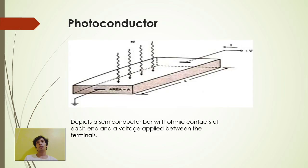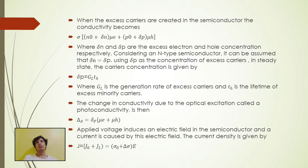Photoconductor depicts a semiconductor bar with ohmic contacts at each end and voltage applied between the terminal. When the excess carriers are created in semiconductor, conductivity becomes the formula. Where delta n and delta p are excess electron and hole concentration, respectively.